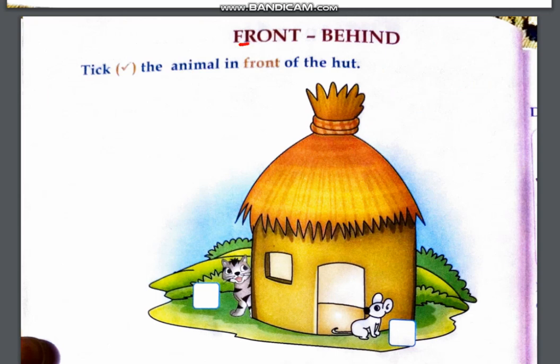Next topic is front and behind. Front means aage and behind means peeche. Here you see a hut. What is in the hut? In the front there's a rat and there's a cat. So what is in front? Tick the animal in front of the hut. What is the question? Tick it. So what is in front?